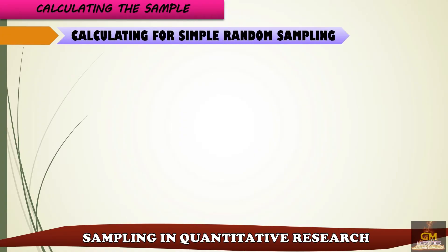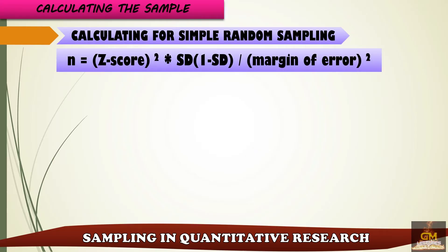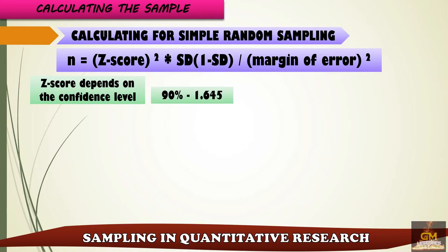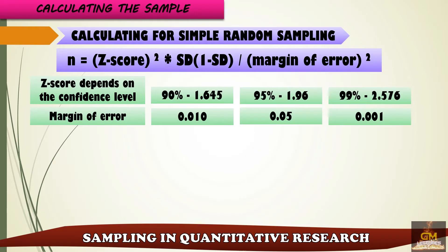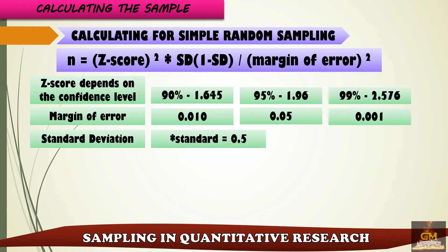Another way of calculating the sample is this formula for simple random sampling: z-score squared times standard deviation multiplied by 1 minus standard deviation, over margin of error squared. Remember that the z-score depends on the confidence level — for 90% it is 1.645, for 95% it is 1.96, and for 99% it is 2.576. For the margin of error, we have 0.010 for 90%, 0.05 for 95%, and 0.001 for 99%. The standard deviation is typically 0.5.